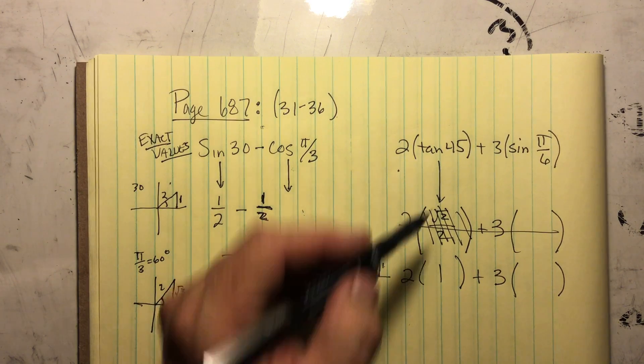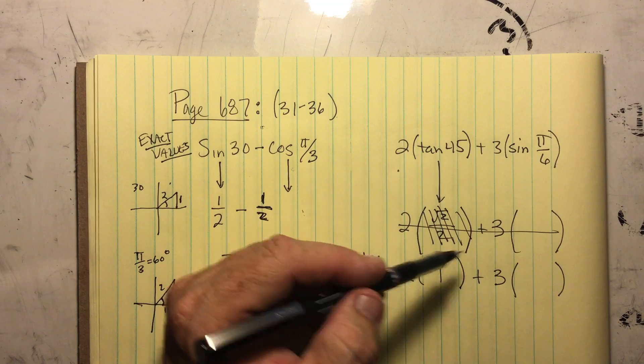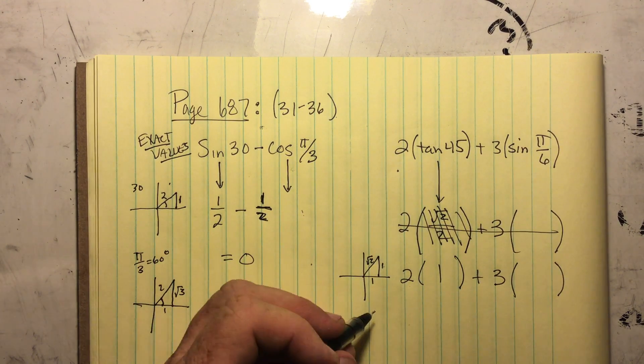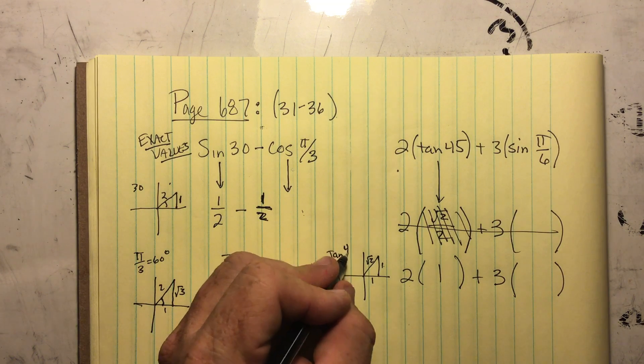2 over 1, 1 over 1 plus 3. I did, I actually only did sine. I wanted tangent up here. So we're going to do 1. So this is 3 times the sine. So that was the tangent of 45 degrees.